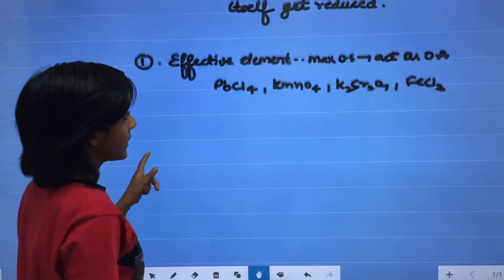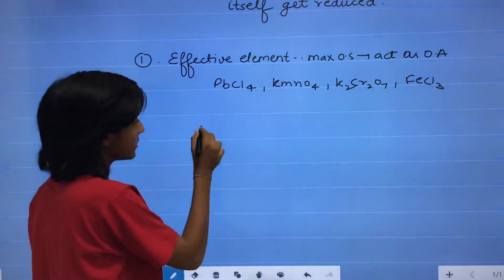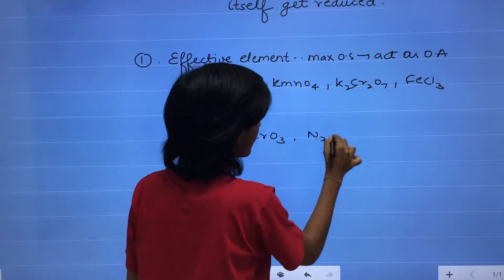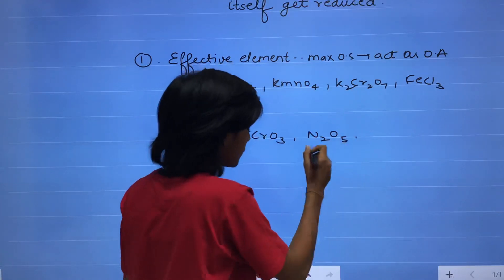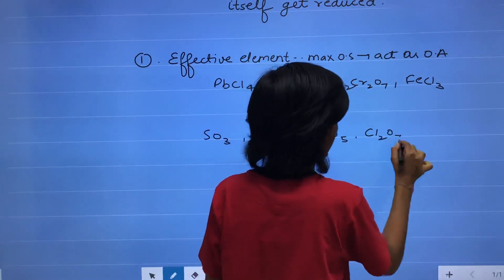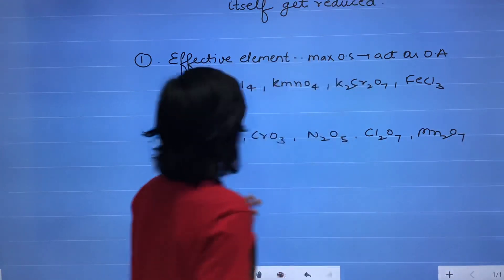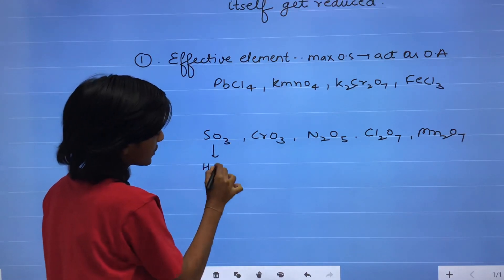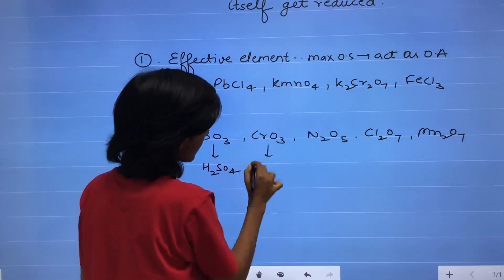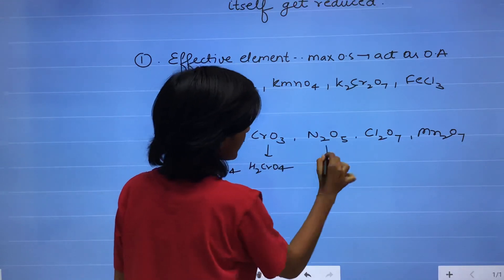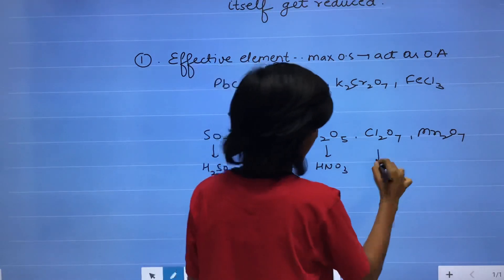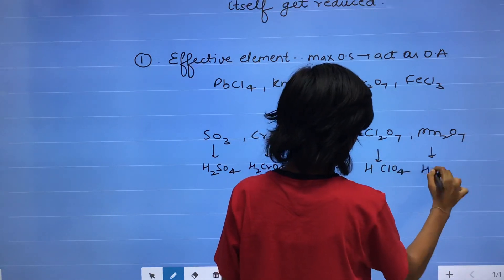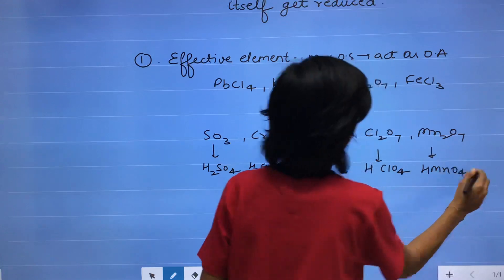Other examples of oxidizing agents include the oxides SO3, CrO3, N2O5, and Cl2O7, and MnO3. The corresponding oxy acids of these oxides are H2SO4, H2CrO4, HNO3, HClO4, and HMnO4.